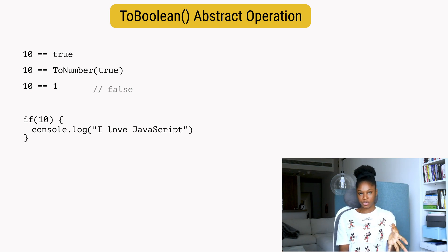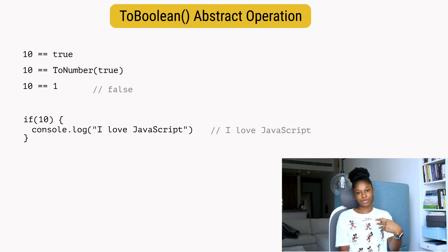We've come to the end of this video. Thank you so much for watching, and I hope you understand how the ToBoolean abstract operation in JavaScript works. I will see you in the next one. Bye!